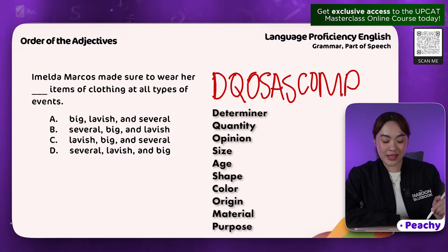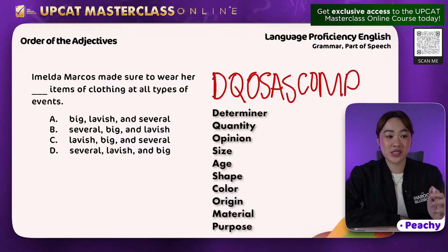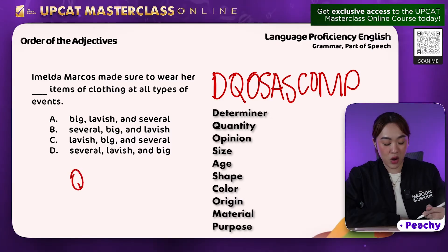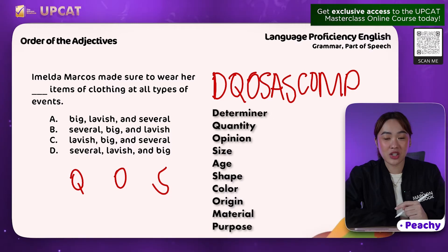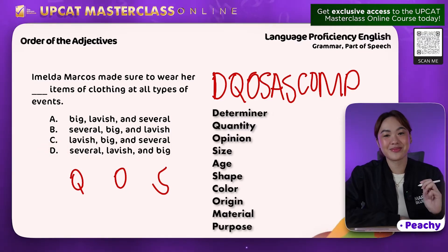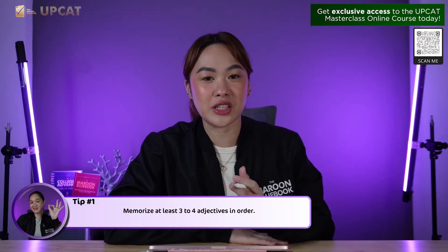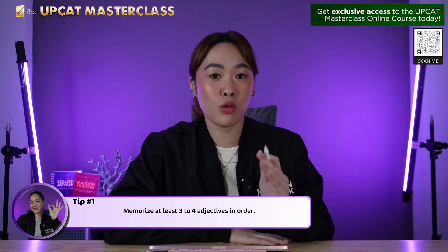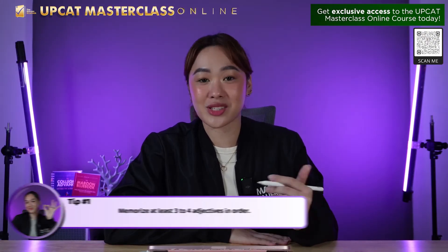Now, let's go back to the item. We have three adjectives here: several, lavish, and big. Several is actually a quantity, lavish is an opinion, and big is the size. So, going back to our acronym, the correct order would be letter D — several, lavish, and big. It's important that if you do not recall the whole acronym, just memorize at least three to four letters to guide you when we encounter questions like this.